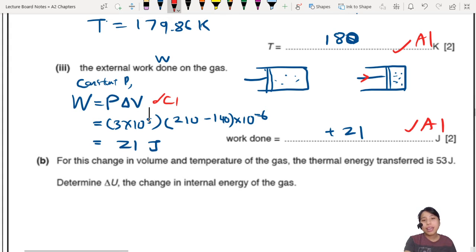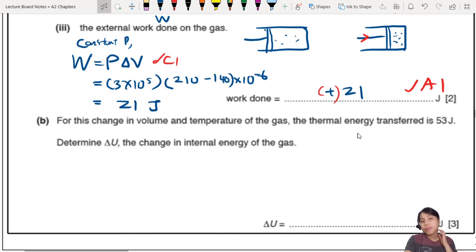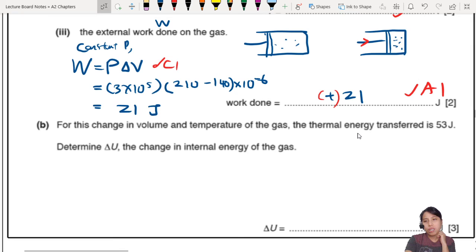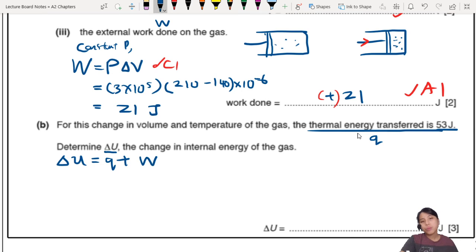Now, the final part, this is where the sign matters. This is why I put bracket. No sign is still okay. So for this change in volume and temperature, the thermal energy transfer, thermal energy transfer is Q, 53 joules. Determine U, the change in internal energy of the gas. My question is, Q, should it be energy transfer into system or energy transfer out of system? How will we know? Let's write down the equation first. Q plus W.